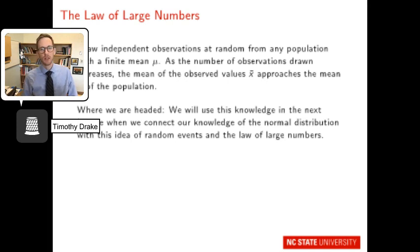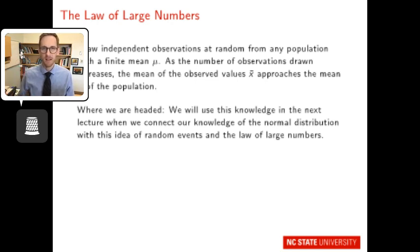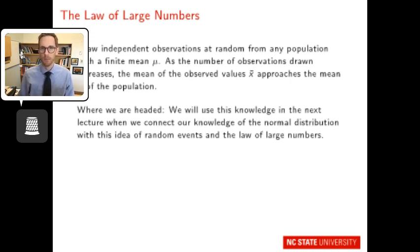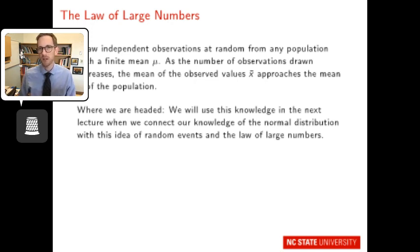This leads us to the law of large numbers. If you draw independent observations at random from any population with a finite mean mu, then as the number of observations increases, the mean of the observed values, x-bar, will approach the population mean mu. The more values you draw, the more the sample mean converges on the population mean. We'll use the law of large numbers and our knowledge of the normal distribution to help with statistical inference in future lectures.